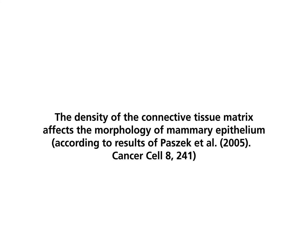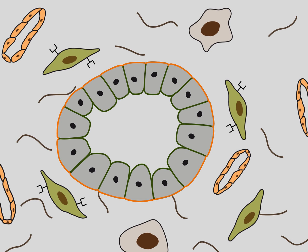The density of the connective tissue matrix affects the morphology of mammary epithelium. Epithelium may experience higher pressure when the density of the connective tissue matrix increases. The higher pressure may produce morphological changes similar to those seen in carcinomas. In this model, tumor-associated fibroblasts produce collagen fibrils as a response to TGF-beta.